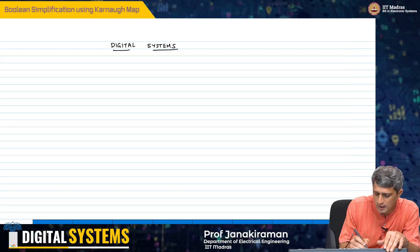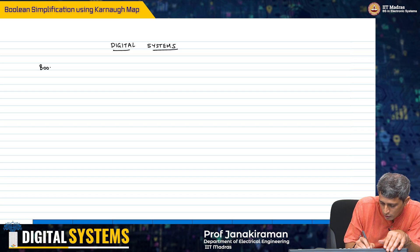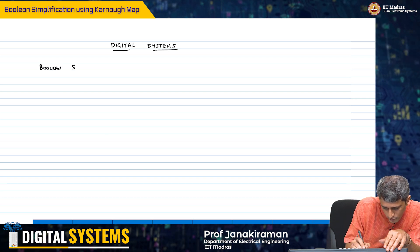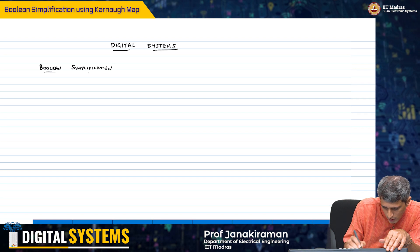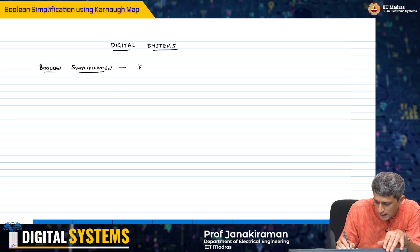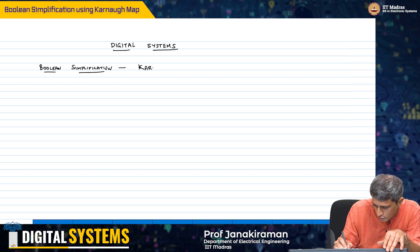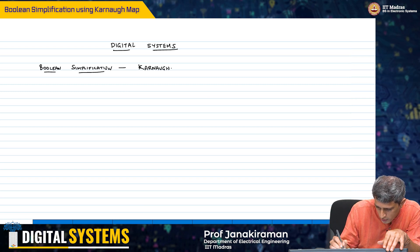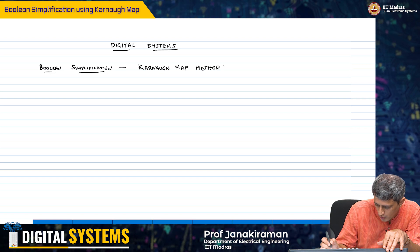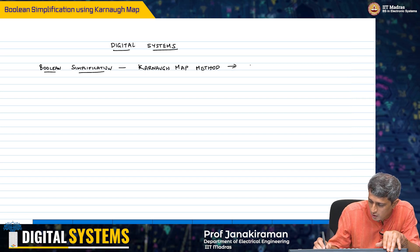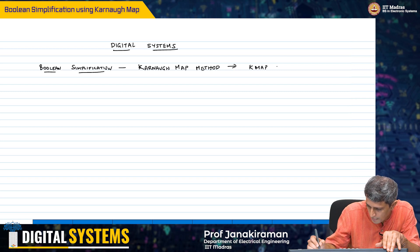We are talking about 2-variable, 3-variable, or 4-variable functions. For 5 variables you can do it, but beyond that it is going to be hard with the method I am going to talk about. This method of Boolean simplification is called the Karnaugh map method, or the K-map method.